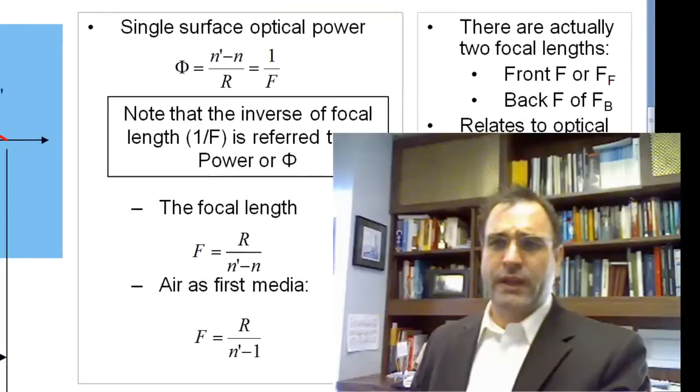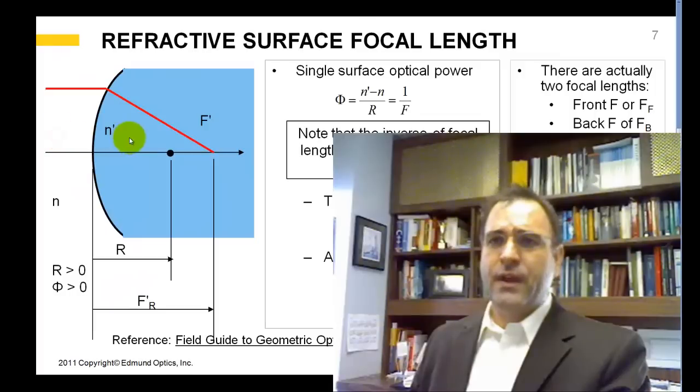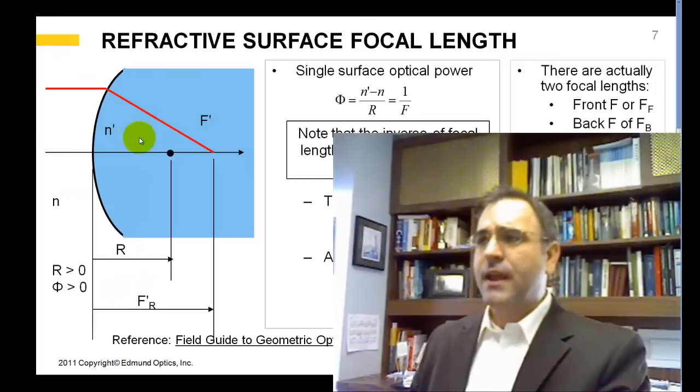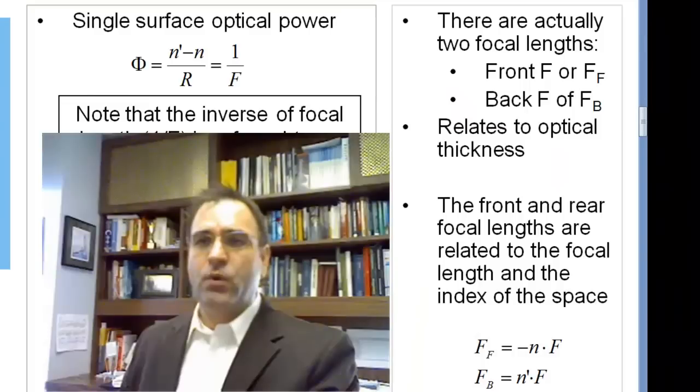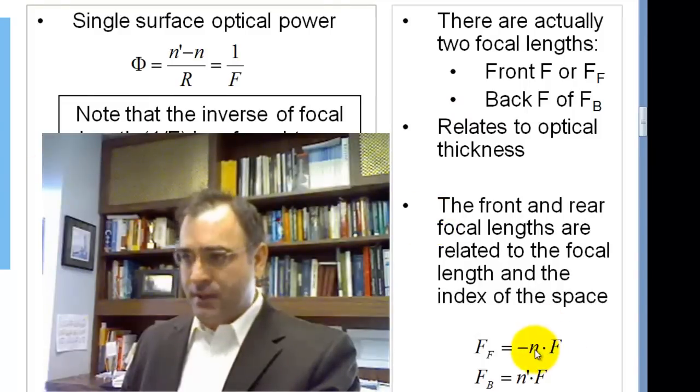There's actually two focal lengths. There's a front focal length here and a back focal length here. And those focal lengths relate to optical thicknesses. I won't go into detail there, but the equations for the front focal length are minus n times f.